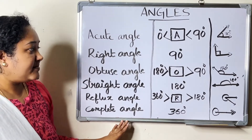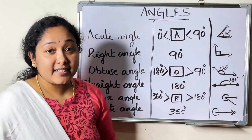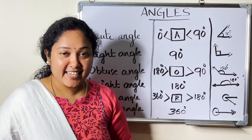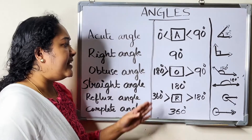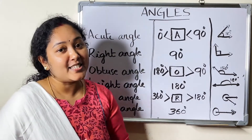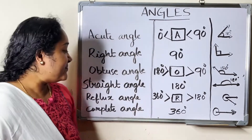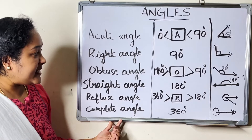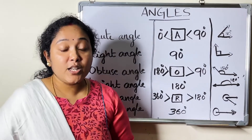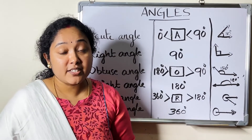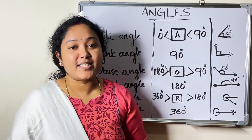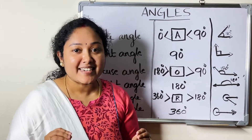Obtuse angle: an angle greater than 90 degrees and less than 180 degrees is called an obtuse angle. Straight angle: an angle whose measure is 180 degrees is called a straight angle.